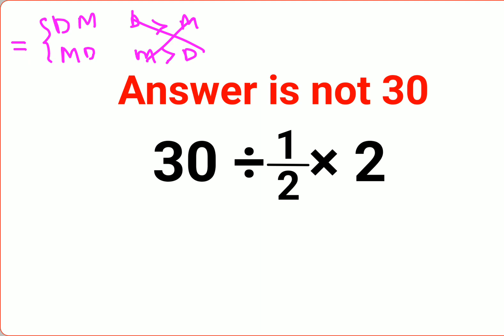So in sums like this, you will have to go from left to right and not do this first. Okay? So first, what you have to do is this division operation has to be done first.